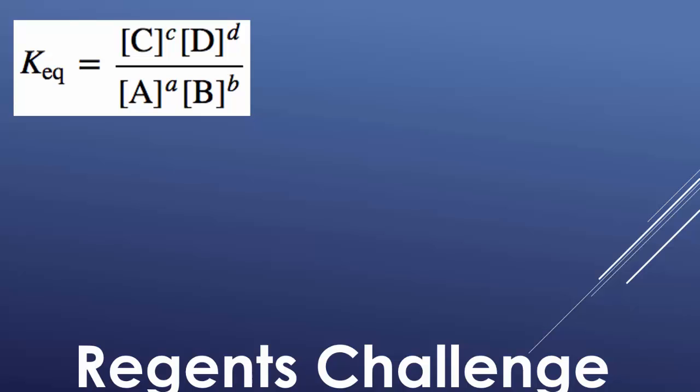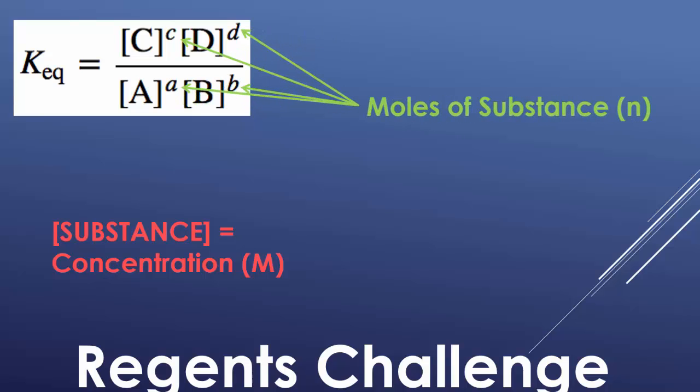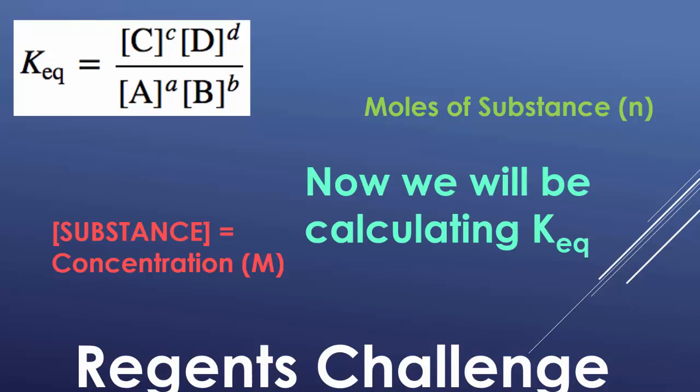We're going to be using the KEQ formula again. When we're talking about the substances, which are your capital letters, they are going to be given to you as an actual concentration molarity numerical value. Those square brackets actually mean concentration, so the molarity of that substance. And the little superscripts, the exponents, those are your moles of the substance. We're going to be using both the concentration and moles of the substance to calculate the actual numerical value of KEQ.